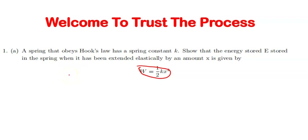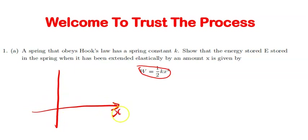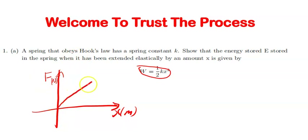Graphically, we can show Hooke's Law by applying a Cartesian graph. On the x-axis, we put x, which is the extension. On the y-axis, we put the force — the spring force — measured in Newtons. Hooke's Law graphically is represented as a straight line, meaning as the force increases, the extension or compression also increases, up to a certain point — which is the elastic limit.